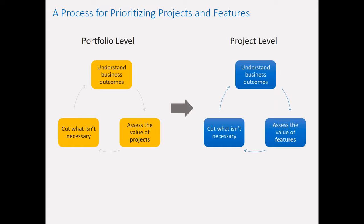Both of these — project selection and feature scoping — are cyclic. You're constantly reassessing which projects to start or even cancel midway. If you've invested a million dollars and realize you won't get any return, you're better to cut your losses sooner. And within a project, you're always reprioritizing scope. Agile development methods have brought this technique to the forefront — teams constantly reprioritize the backlog to make sure they're working on the most important thing. Make those decisions based on business outcomes. That is a key technique in that process.